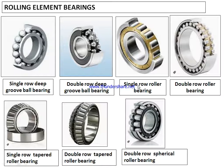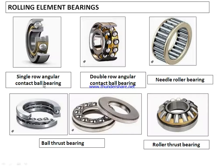This slide shows actual photographs of different types of bearings: single row deep groove ball bearing, double row deep groove ball bearing, single row roller bearing, double row roller bearing, single row tapered roller bearing, double row tapered roller bearing, double row spherical roller bearing — note the spherical shape of the roller — single row angular contact ball bearing, double row angular contact ball bearing, needle roller bearing, and ball and roller thrust bearings.